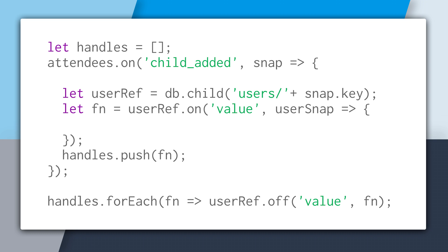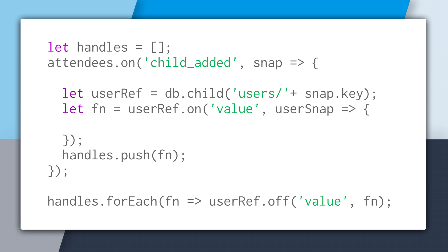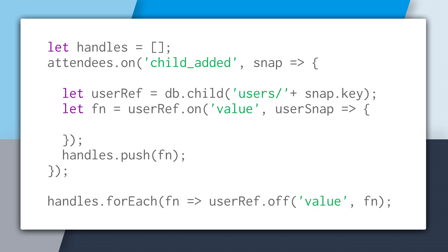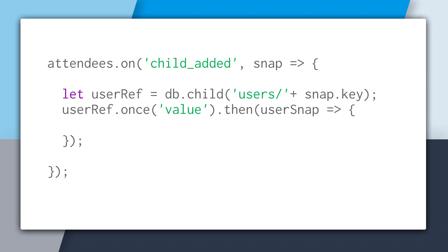To keep track of each handle so we can unsubscribe from the real-time events, we'll create an array of handles. Inside of the child_added callback, we'll do our join — grab the user reference events and get back the user data — then push the handle onto the handles array. Later, when you need to dispose of all the child events, you can loop through the array and call the off method with the handle. For most cases when grabbing reference data like user data, you can just use once rather than tracking all handles with on.